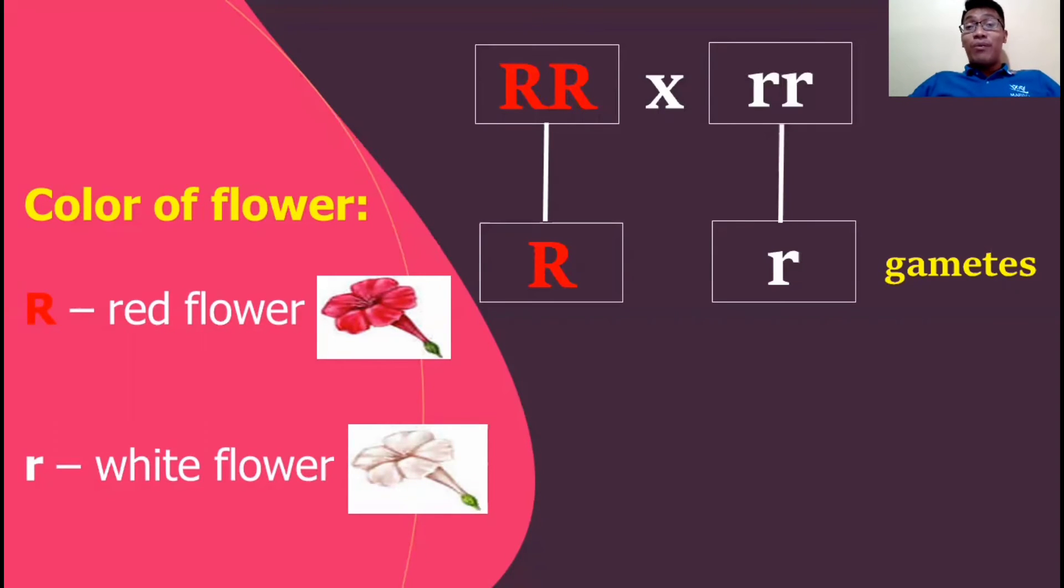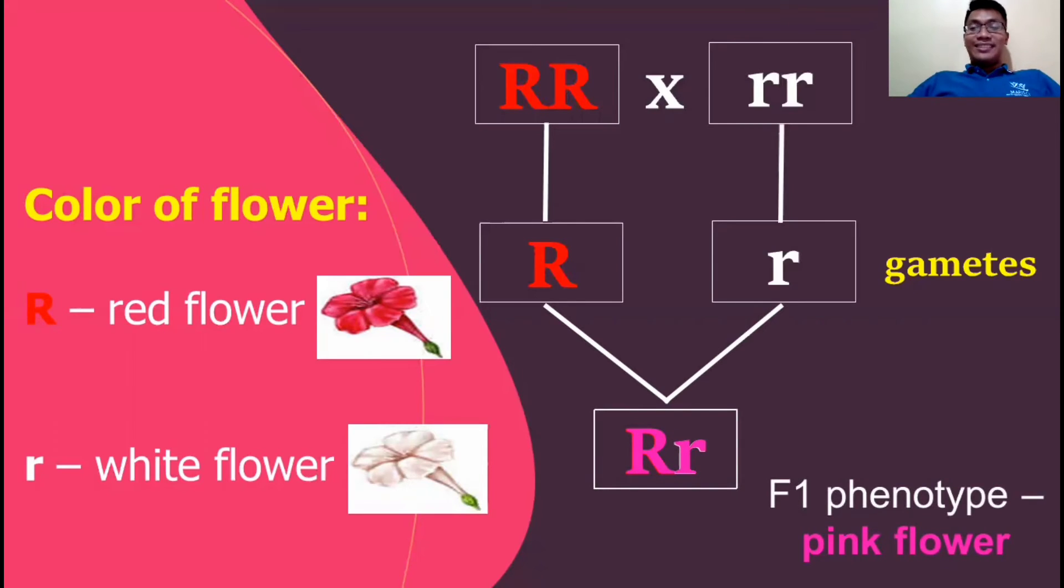But again, there should be splitting or segregation and this can be found in the gametes. Now when the plant with red flower is crossed with the plant with the white flower, the result would be a capital R and a small r, and its color would be pink.